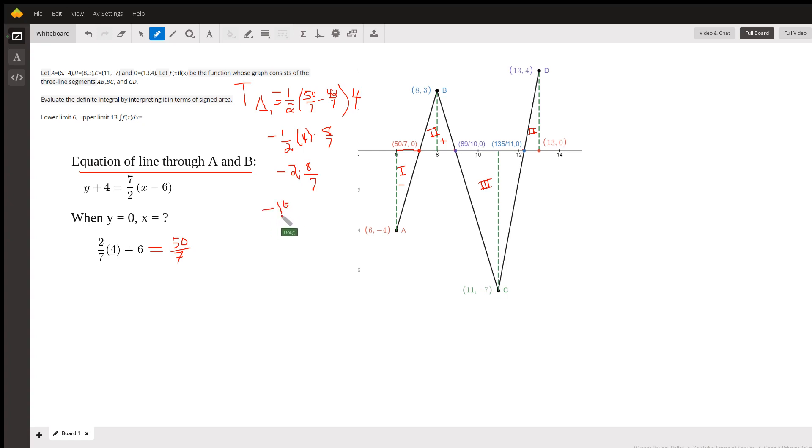So follow the same pattern for triangles 2, 3, and 4. Add them together, and you've got an interpretation of this definite integral. Okay. There you go. Hope that helped. If you have any questions, post a comment.